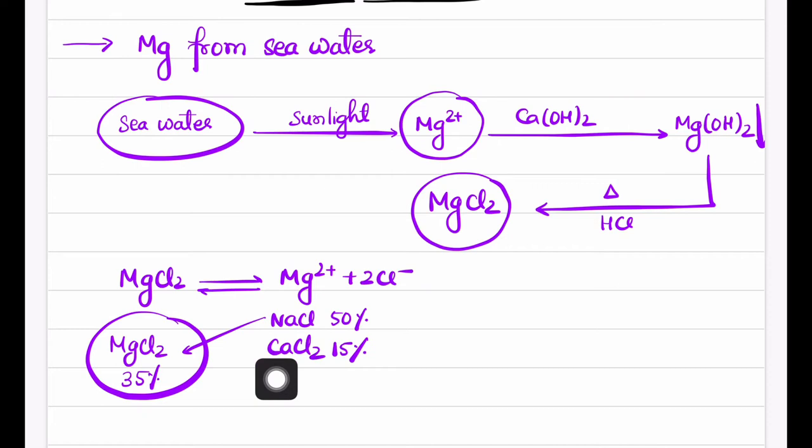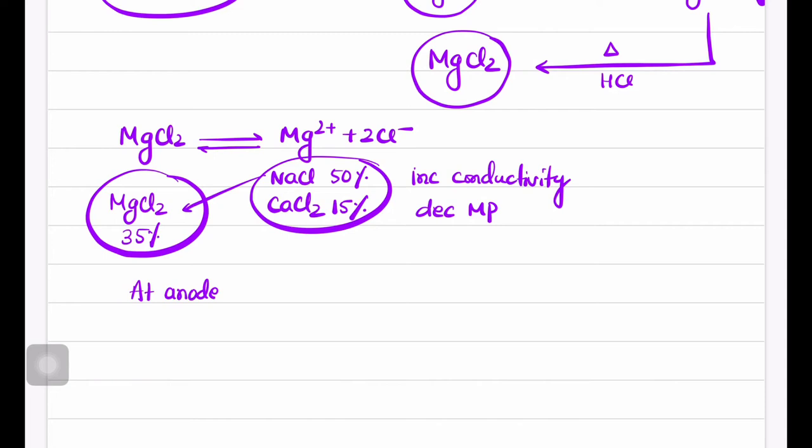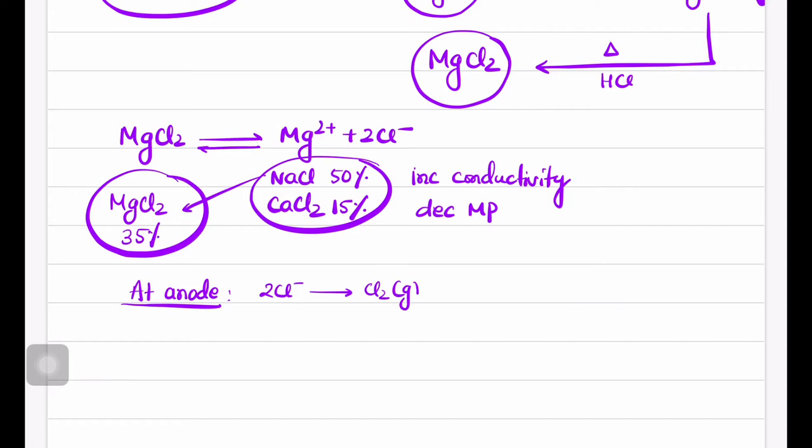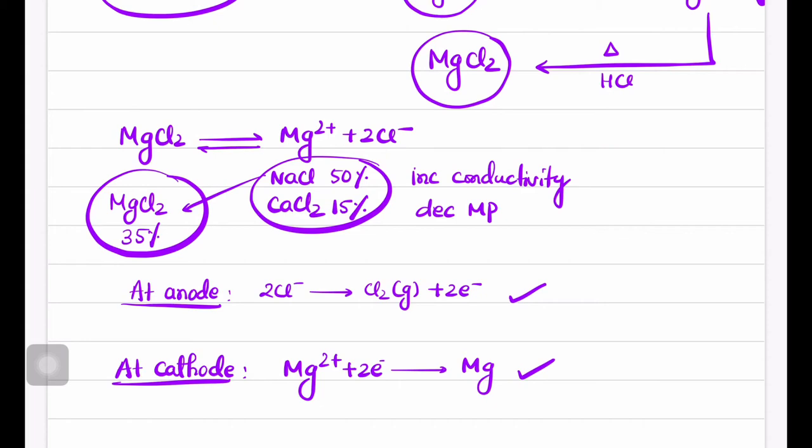What is the purpose of adding NaCl and CaCl2? To increase conductivity as well as to decrease the melting point. Now electrolysis will be done: at anode, chloride ion will get oxidized to chlorine gas liberating two electrons, and at cathode, Mg2+ will be reduced.